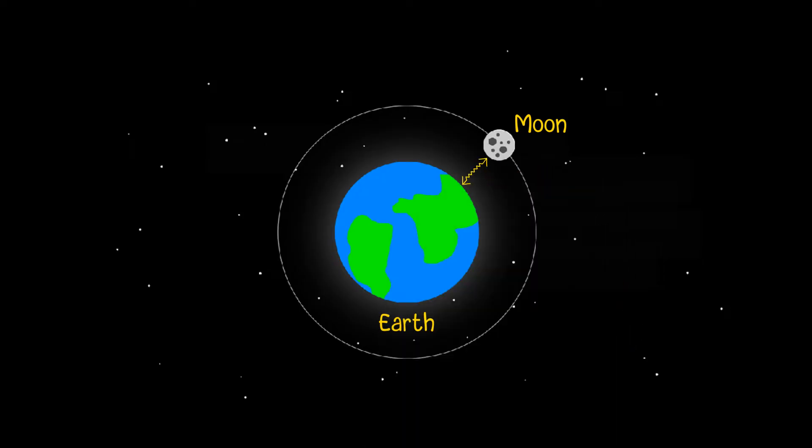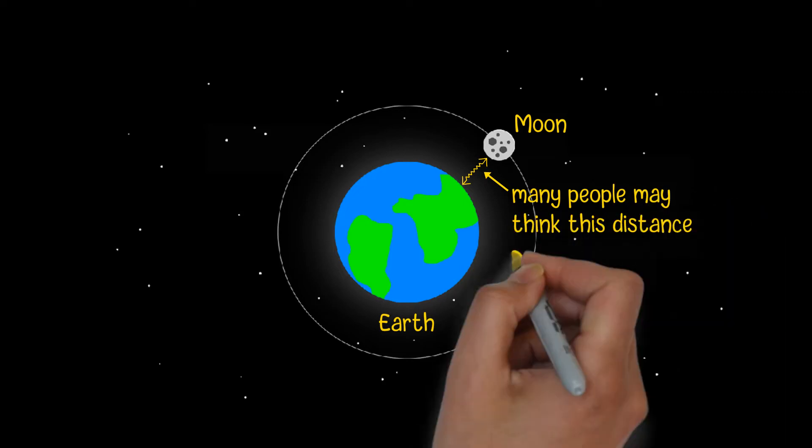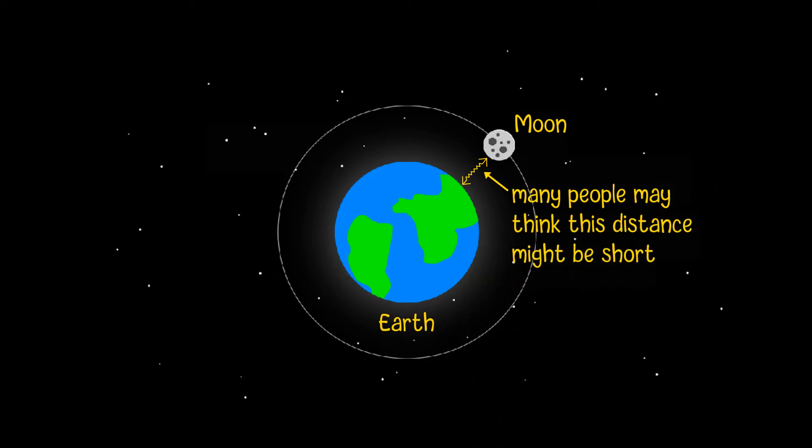Since the Moon is a satellite of Earth and we can see it every night, many people may think Earth is very close to the Moon, just like most man-made satellites. However, this is not true. The Moon's orbit is not a perfect circle, and it is not always the same distance from Earth.